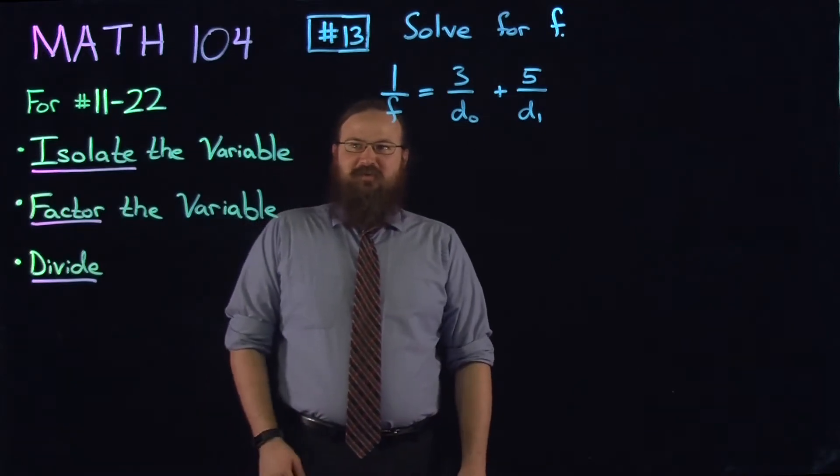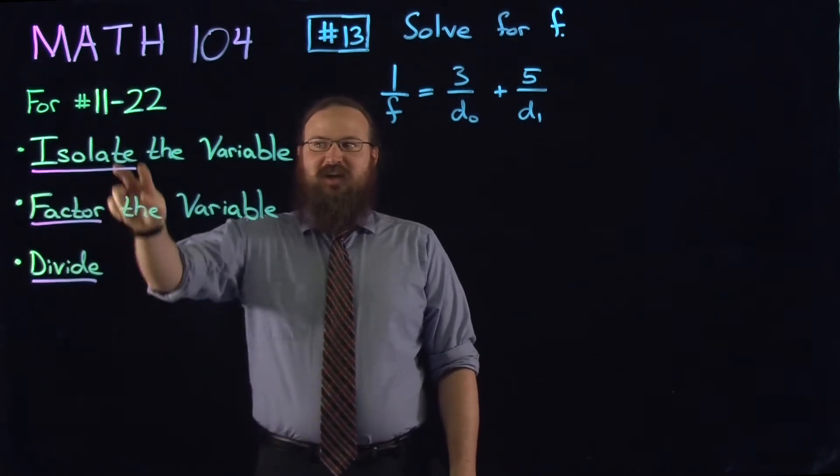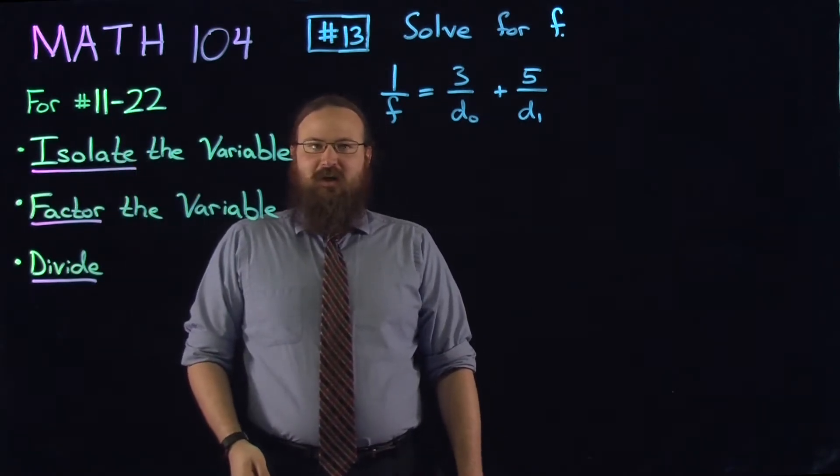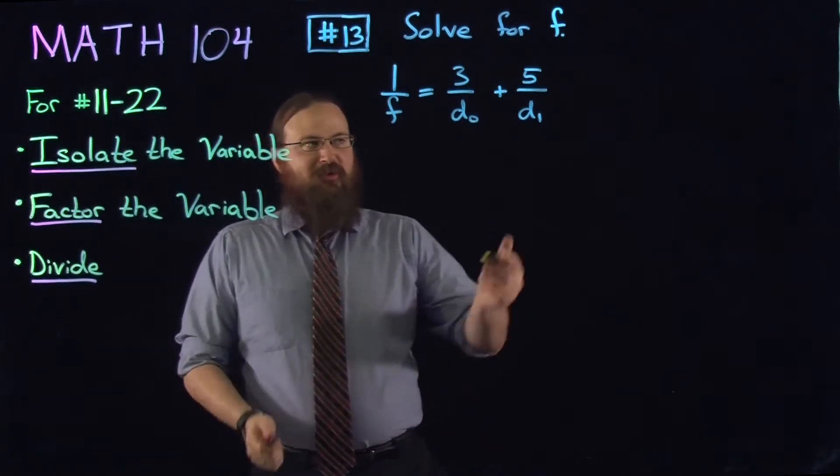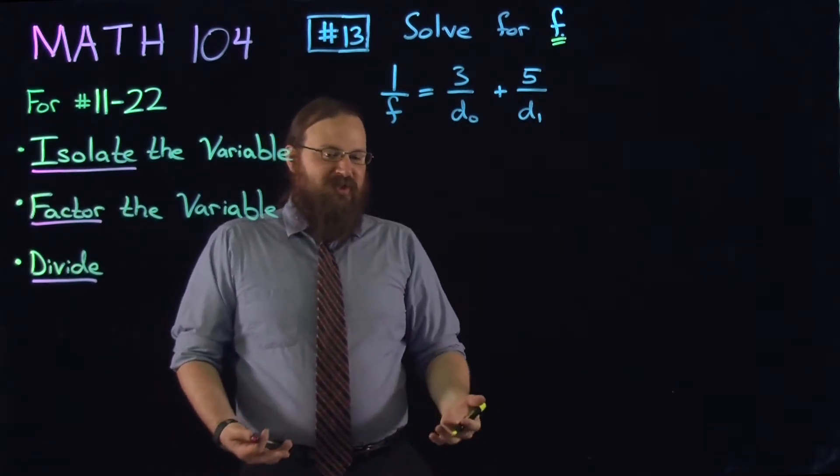Hello again. We're going to continue on with gateway questions for Math 104. This is number 13 and it falls into this category of number 11 through 22 where we're going to be solving for a variable, in this case we're solving for f, and an equation where there's potentially multiple variables.